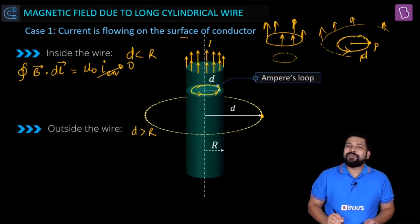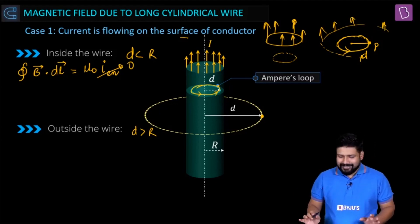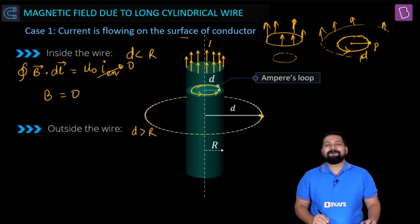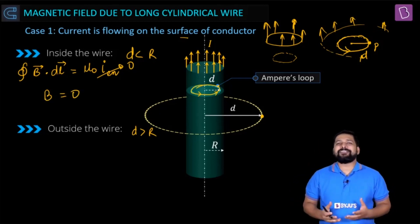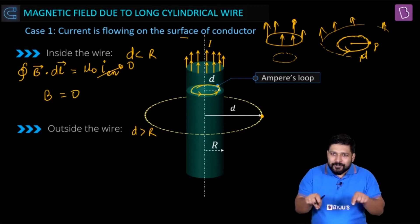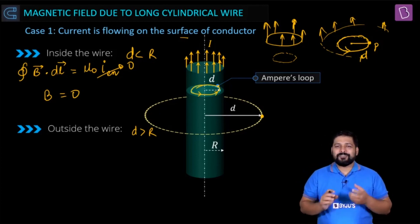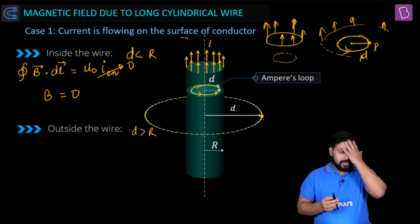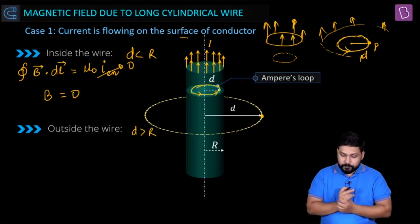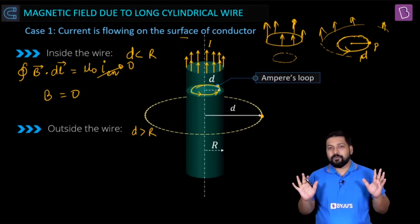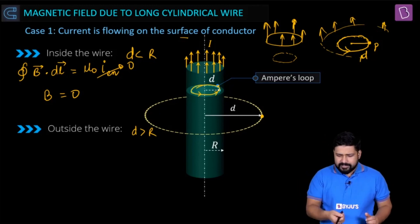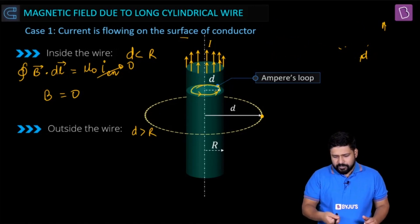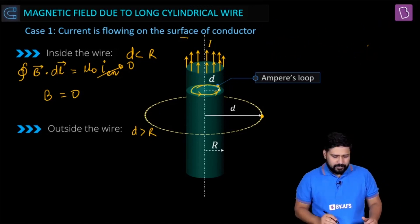Since no current is threading in and out of the loop, I enclosed is equal to zero. If that is the situation, then definitely B will be equal to zero. Since there is no current enclosed within that Amperian loop, we can directly say B equals zero.